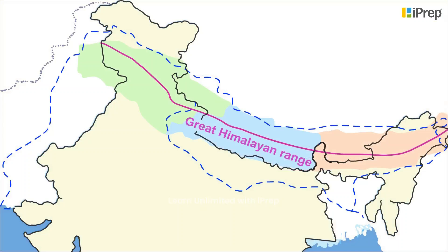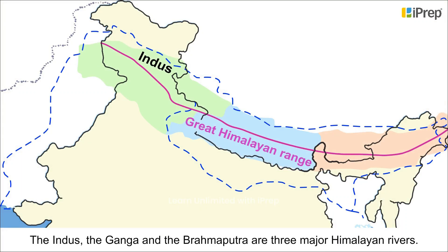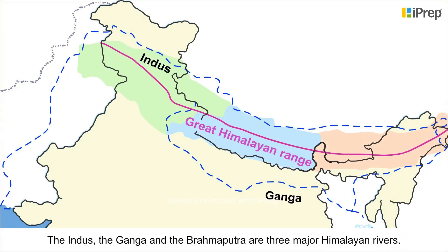The Indus, the Ganga and the Brahmaputra are three major Himalayan rivers. They are perennial in nature.